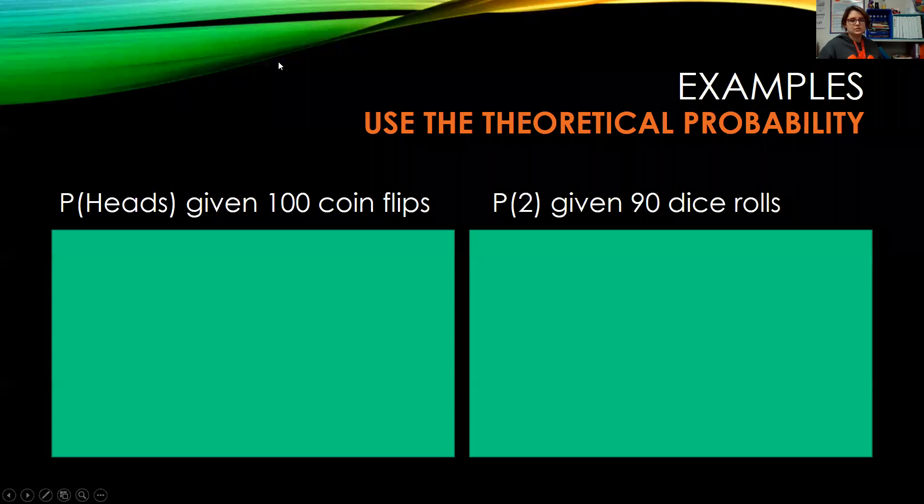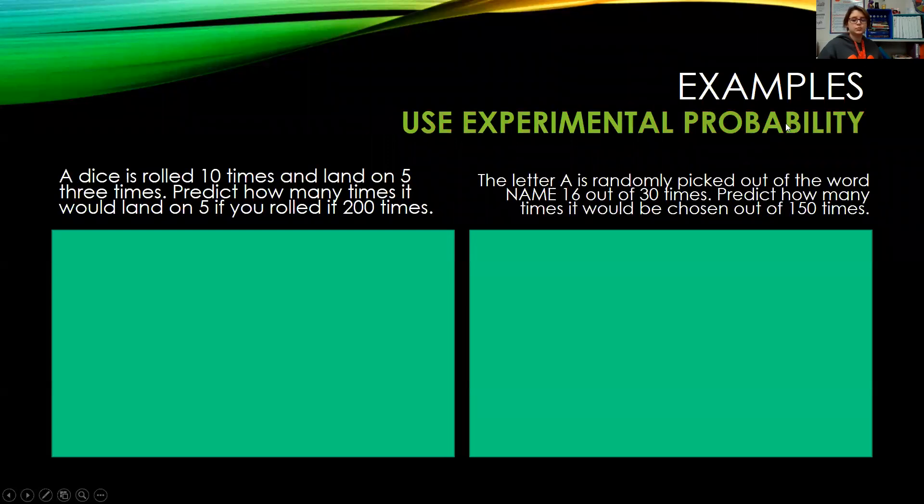And our next set of examples, we're going to use experimental probability. So we've already run an experiment, and we're going to use that to predict another experiment.